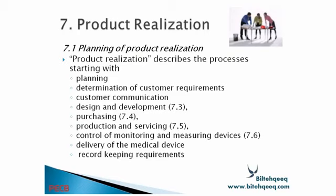The next section is product realization. Product realization starts with planning, then determination of customer requirements, customer communication, design and development, purchasing, production and servicing, control of monitoring and measuring devices, delivery of the medical device, and record keeping requirements. We will go through all these elements step by step.